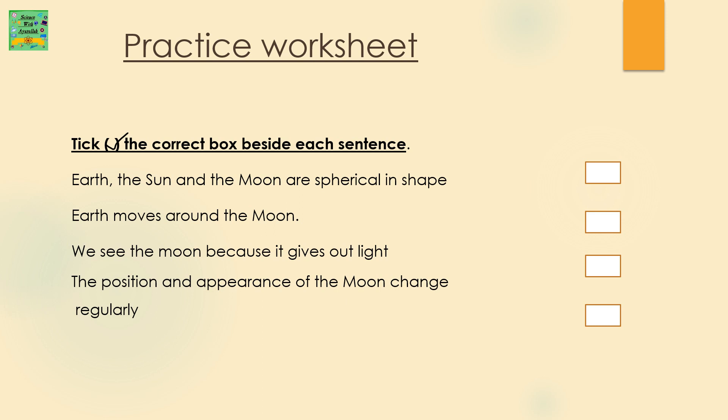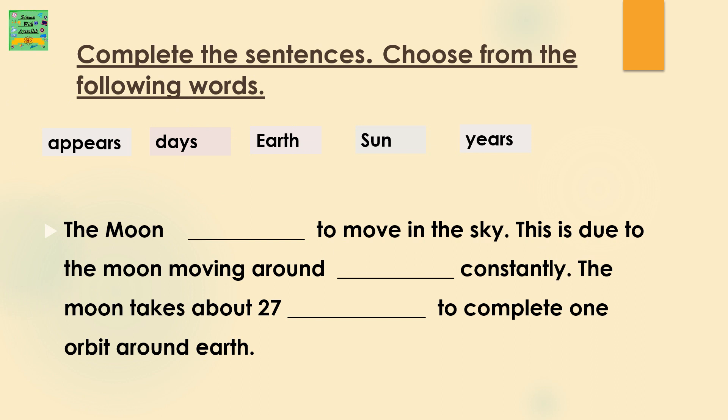Pick the correct box beside each sentence. Earth, the Sun and the Moon are spherical in shape. Earth moves around the Moon. We see the Moon because it gives out light. The position and appearance of the Moon changes regularly. The Moon appears to move in the sky. This is due to the Moon moving around the Earth constantly. The Moon takes about 27 days to complete one orbit around the Earth.